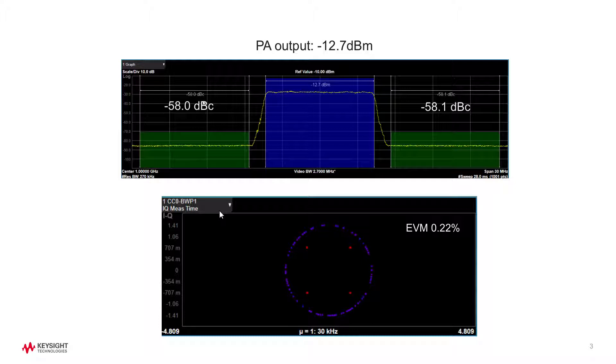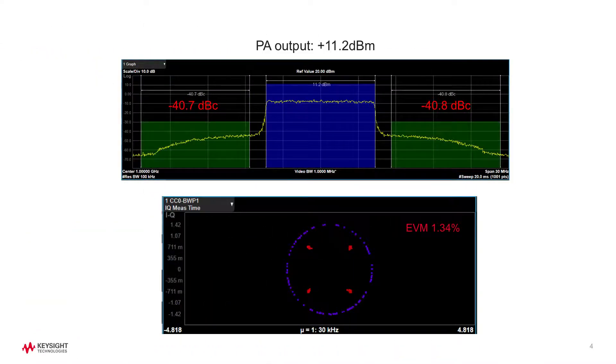When power level is relatively low, PA mostly operates in linear fashion. EVM and ACPR are pretty good with almost no visible problems. As power gets higher, the spectral regrowth in adjacent channels degradates ACPR dynamic range, in this example by 18 dB.